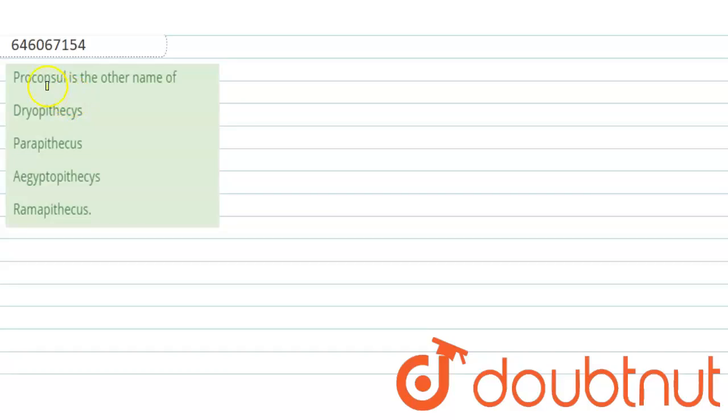So the question here is, Proconsul is the other name of? We have four options here. Option A is Dryopithecus, Option B is Parapithecus, Option C is Aegyptopithecus, and Option D is Ramapithecus.